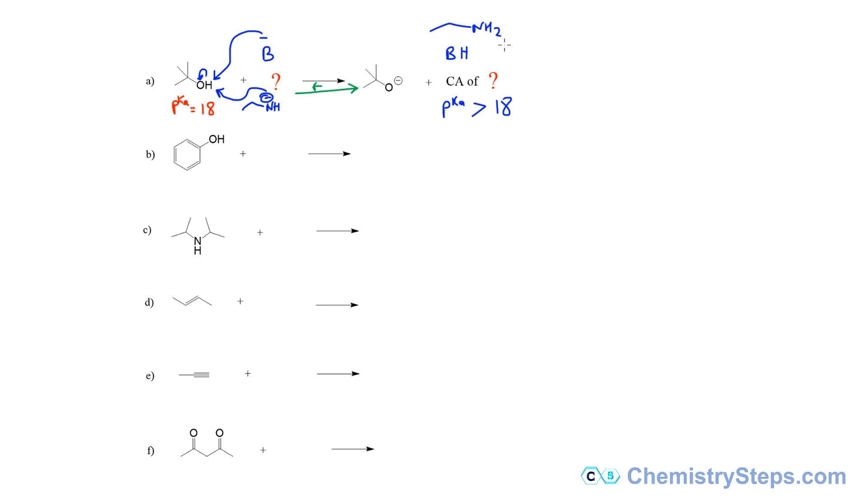The pKa of the amines, so this is about 38. So what we have is going from pKa 18 to 38 and definitely this reaction will be possible because the equilibrium is shifted to the right.